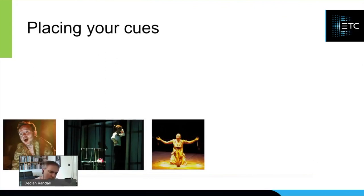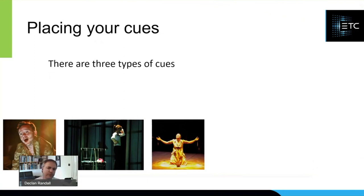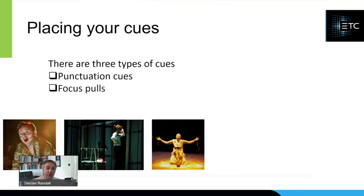When you start cueing your show — you've made your choices, focused your lights, and you're sitting at the console ready to put your cues in — for me there are generally three types or styles of cues you'd start plumbing in. The first is what I would call a punctuation cue. There are your focus pools and there are your mood shifts.